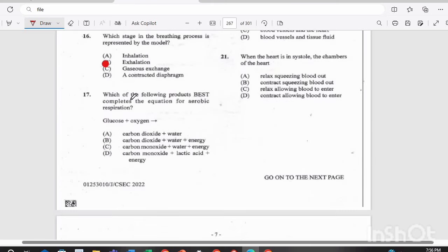Question 17. Which of the following products best completes the equation for aerobic respiration? We have glucose plus oxygen. So complete it with the following. Is it A, carbon dioxide plus water? B, carbon dioxide plus water plus energy? C, carbon monoxide plus water plus energy? Or D, carbon monoxide plus lactic acid plus energy? Your answer there should be B, aerobic respiration gives us carbon dioxide, water, and energy.